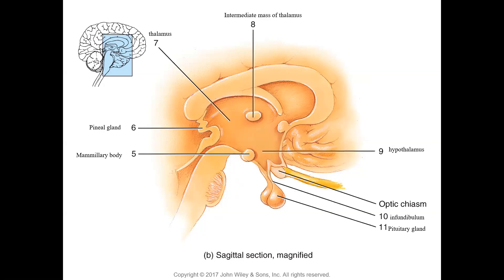The hypothalamus consists of the infundibulum — a stalk that connects the hypothalamus to the pituitary gland. The mammary bodies are two small round masses located posterior to the infundibulum, serving as the relay station for smell and taste reflexes. Finally, the epithalamus is superior and posterior to the thalamus. It includes the pineal body, a small endocrine gland that secretes the hormone melatonin.